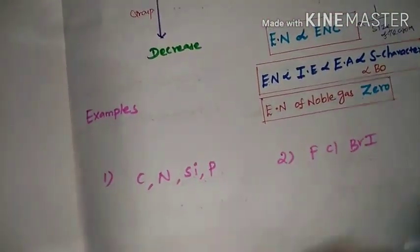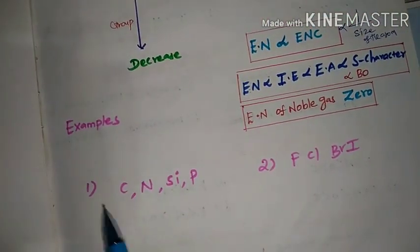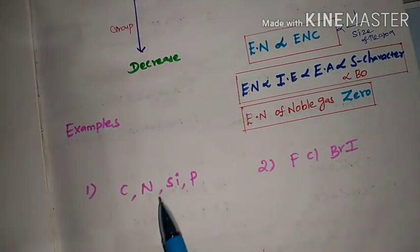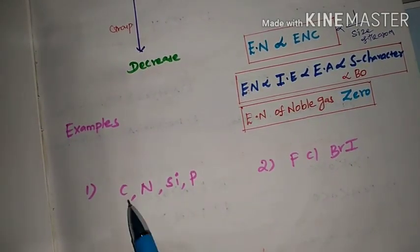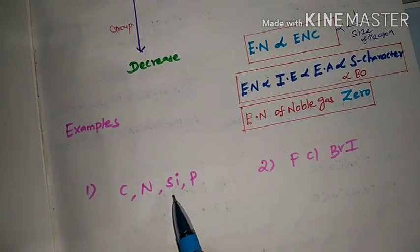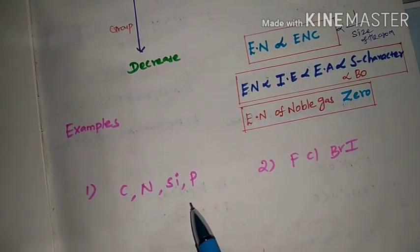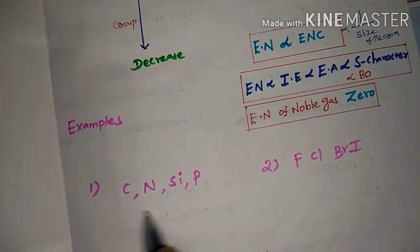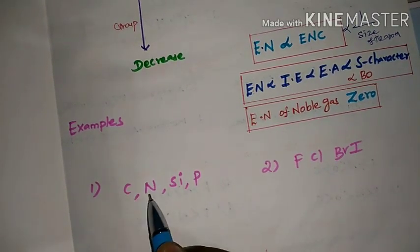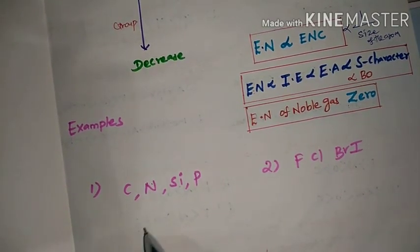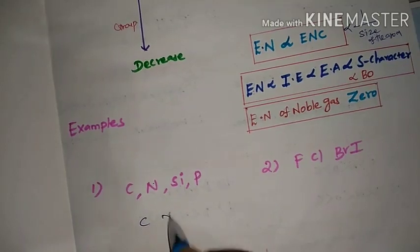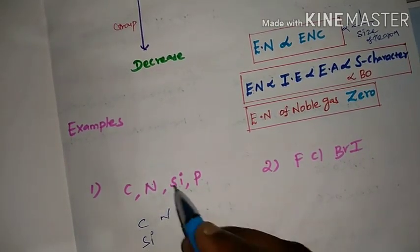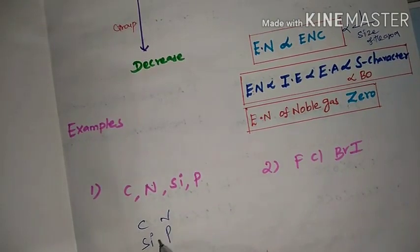First question: Carbon, Nitrogen, Silicon, and Phosphorus — these four elements are p-block elements in the periodic table. Arrange carbon, nitrogen, silicon, and phosphorus in order of electronegativity.